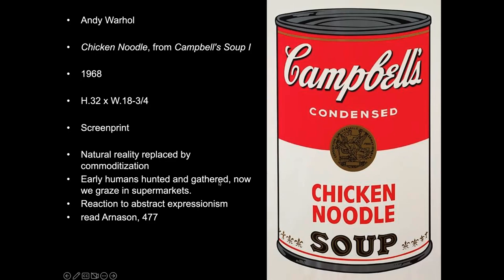Early humans hunted and gathered, and in some ways modern humans graze in supermarkets — though recently that's been trouble because of high inflation. One of Warhol's key ideas is that mass-produced products are democratizing. He said you can be watching TV and see Coca-Cola, knowing the president drinks Coke and Liz Taylor drinks Coke — and you can drink it too. A Coke is a Coke, and no amount of money gets you a better Coke. Warhol's signature image is the Campbell's soup can, a product he said he ate for lunch every day for 20 years.